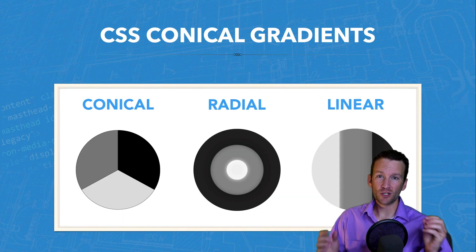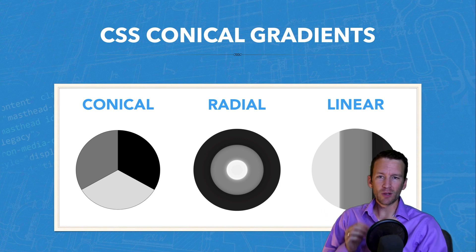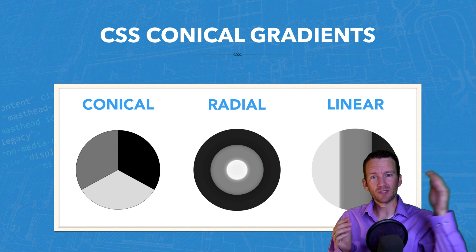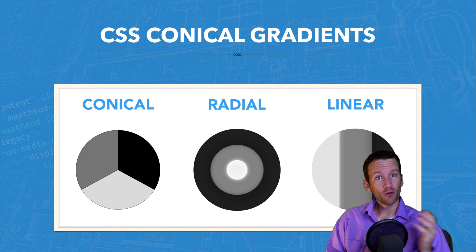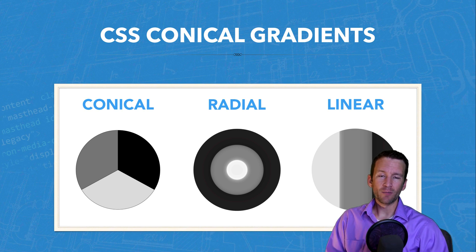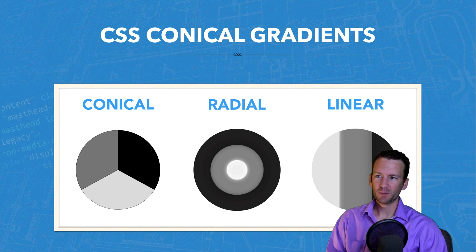The traditional gradients — radial and linear — either work in a line or they work from the innermost part outward. But the conical gradient works around the edge of the object in a circular fashion to create a cone. That's where the name comes from: when you have a conical gradient, it sort of looks like a cone.